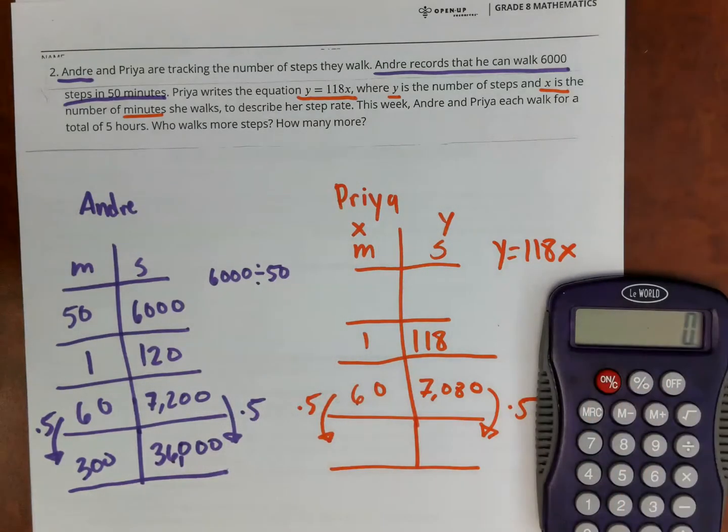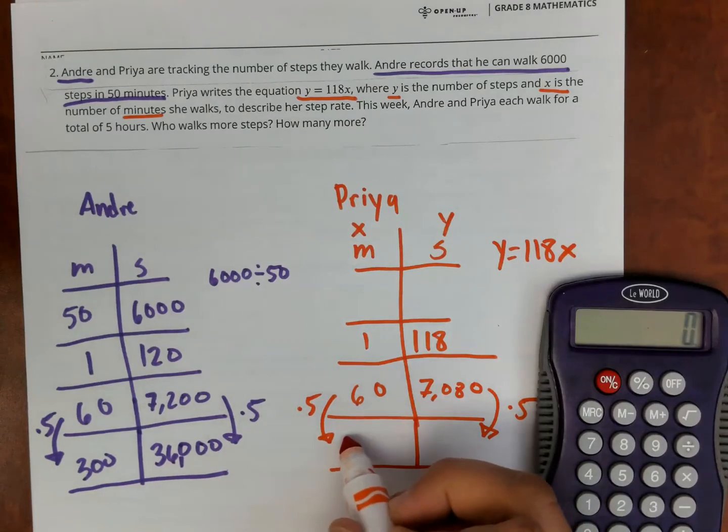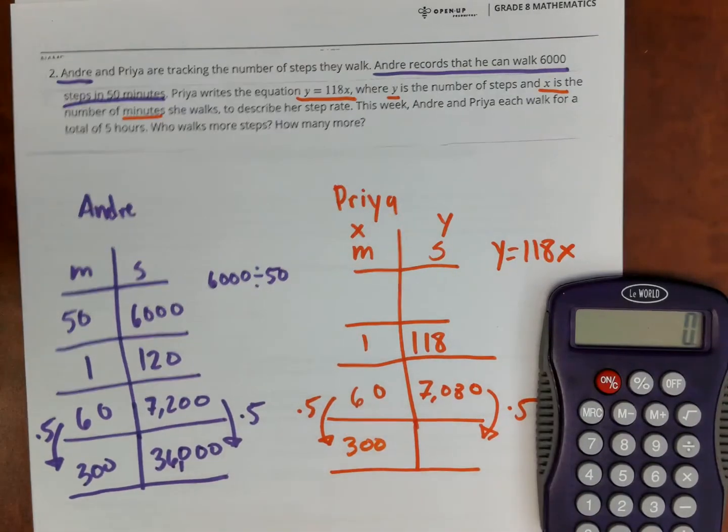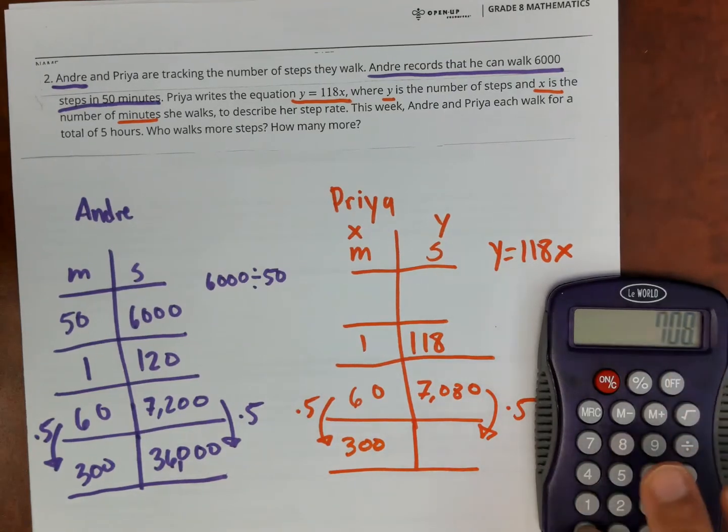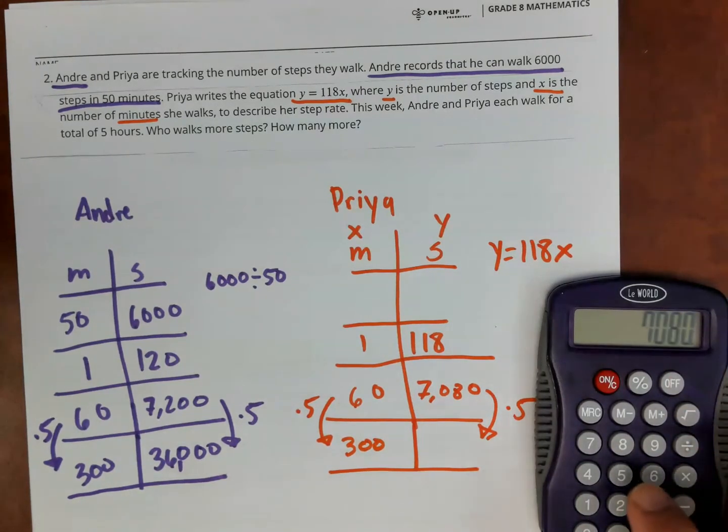I'm going to do Priya's again. This is 300 minutes, which is five hours. 7,080 times five, which is 35,400.